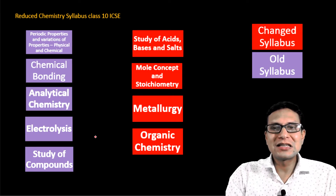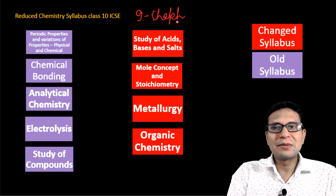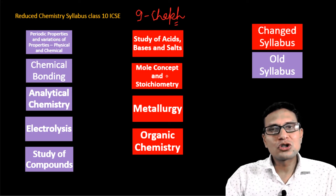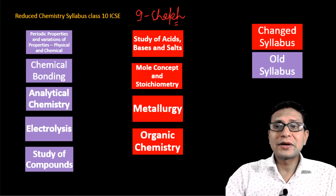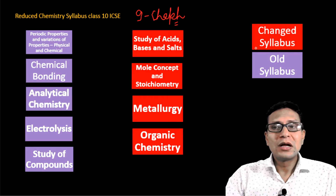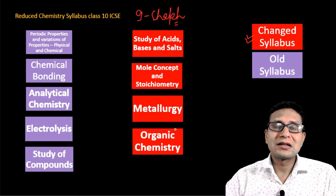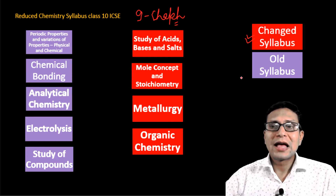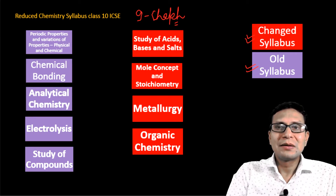Total, you are having 9 chapters in your syllabus — 9 chapters in Class 10th ICSE Chemistry. I have put 2 colors here: one is red and one is blue. The red color represents the changed syllabus where the council has reduced content, and the blue means there is no change in that chapter — the chapter remains exactly as it was.